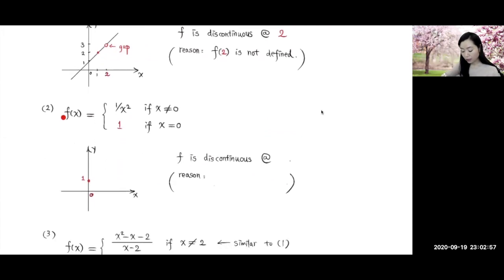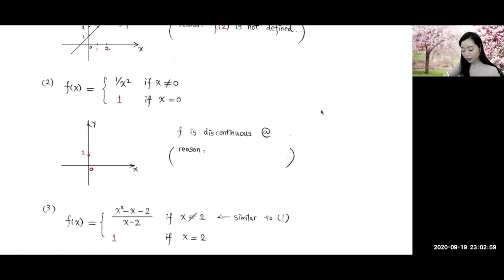Number 2. In this example, this is a piecewise defined function, f of x equals 1 over x squared. And if you look at the handout I gave you on those functions, the graph is going to be like this. And when x equals 0, the function is defined to be 1. So 1 over here, we put in a single dot.